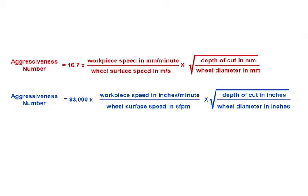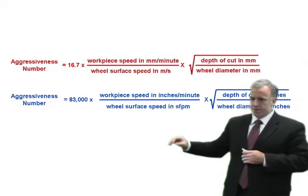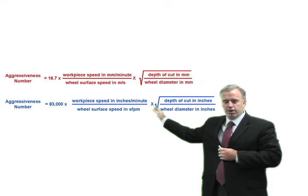The aggressiveness number takes into account the depth of cut, the feed rate or the table velocity, the wheel speed, and the wheel diameter. And there are two ways to calculate it. In metric, it's 16.7 times your surface speed in millimeters a minute, divided by your wheel speed in meters per second, times the square root of the depth of cut in millimeters divided by the wheel diameter. And the same equation, just with some conversions in imperial.